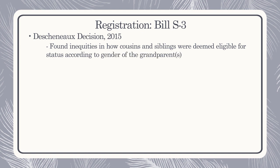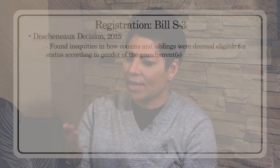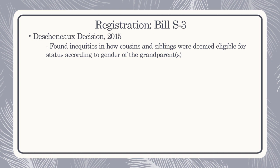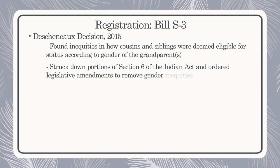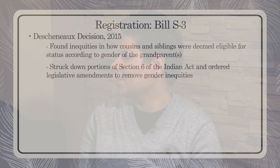So let's talk about specifically how S-3 came to be. In 2015, the Deschanaux decision came out of the Quebec Superior Court from the community of Odanak. Stéphane Deschanaux argued that had his grandmother been born male, he and his children would have been registered as status under the Indian Act. The court found inequities in how cousins and siblings were deemed eligible for status based on the gender of grandparents. He won the court case, and as a result the court struck down portions of Section 6 and ordered legislative amendments to remove all gender inequities. So Bill S-3 got royal assent in December 2017.